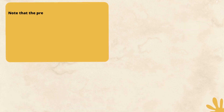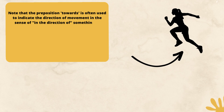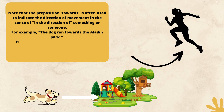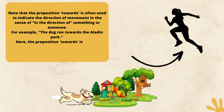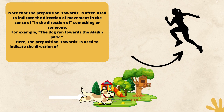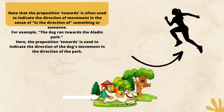Note that the preposition 'towards' is often used to indicate the direction of movement in the sense of 'in the direction of something or someone.' For example, the dog ran towards the Aladdin park. Here, the preposition 'towards' is used to indicate the direction of the dog's movement in the direction of the park.